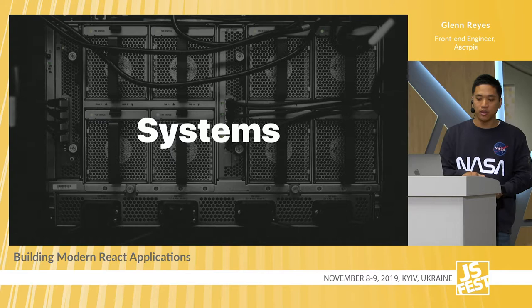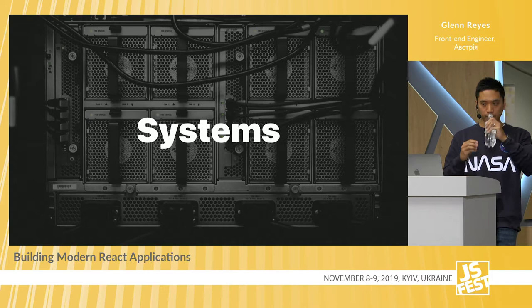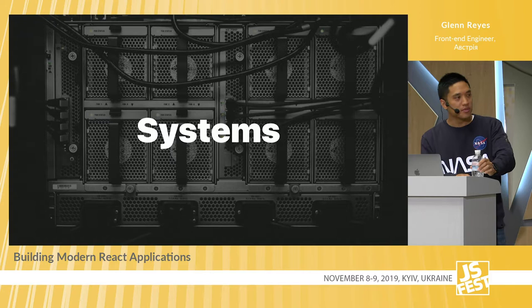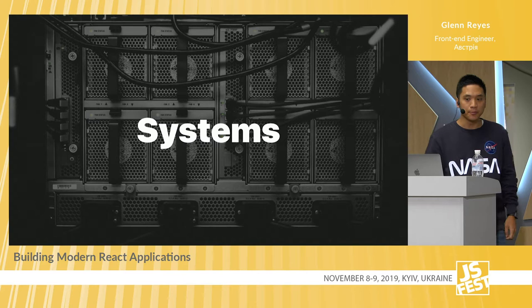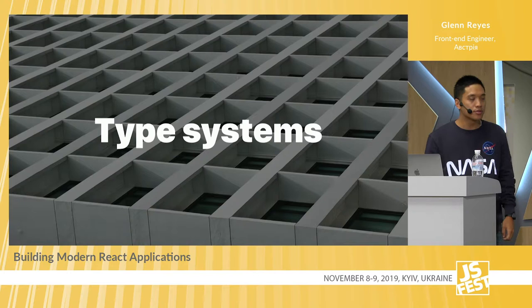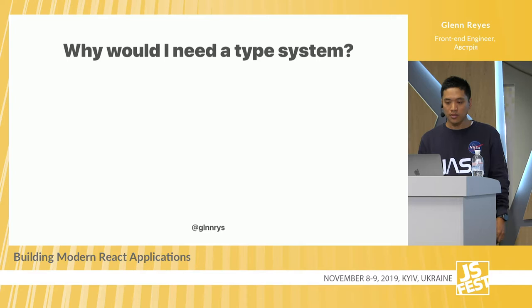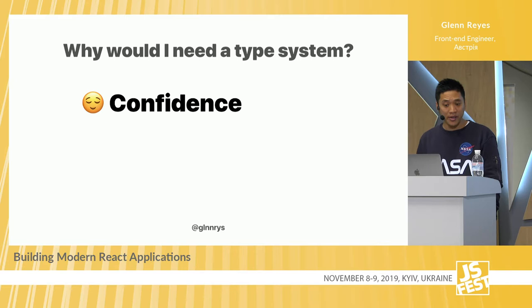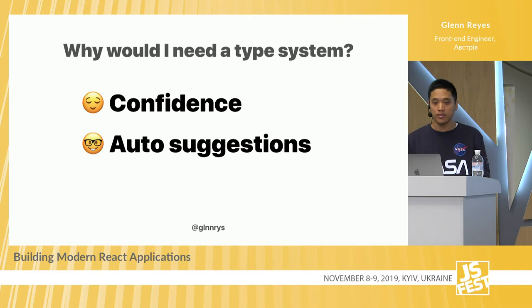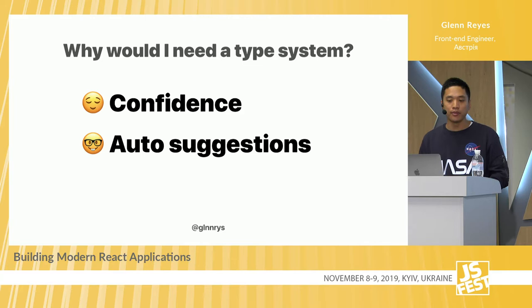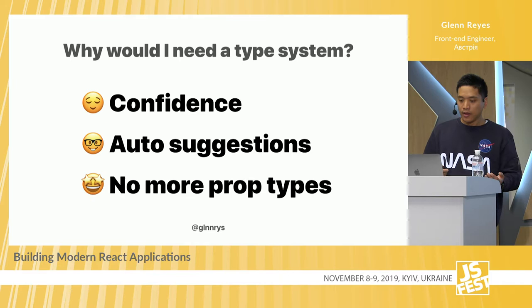Now let's talk about systems — the things that give us robustness and consistency. One of my favorites is type systems. Why would you need a type system in your React codebase? By writing types, you get type safety, robustness, confidence, and awareness. Types also give you auto-suggestions, so there's less to think about what types are actually possible. With types, there's no more need for runtime type checking — for example, PropTypes — which also leads to reduced bundle size.